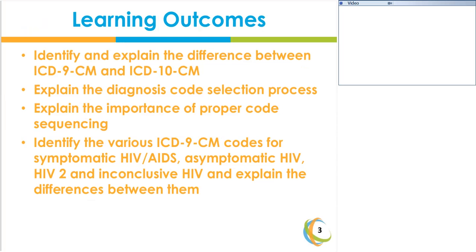The second objective is to explain the diagnosis code selection process, to explain the importance of proper code sequencing, and to identify the various ICD-9 codes for symptomatic HIV and AIDS, asymptomatic HIV, HIV-2, and inconclusive HIV. We'll also explore the differences between the four different types of codes.